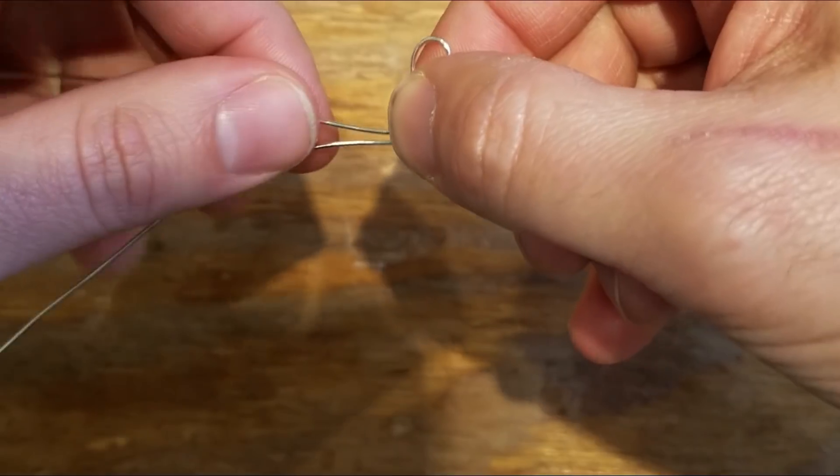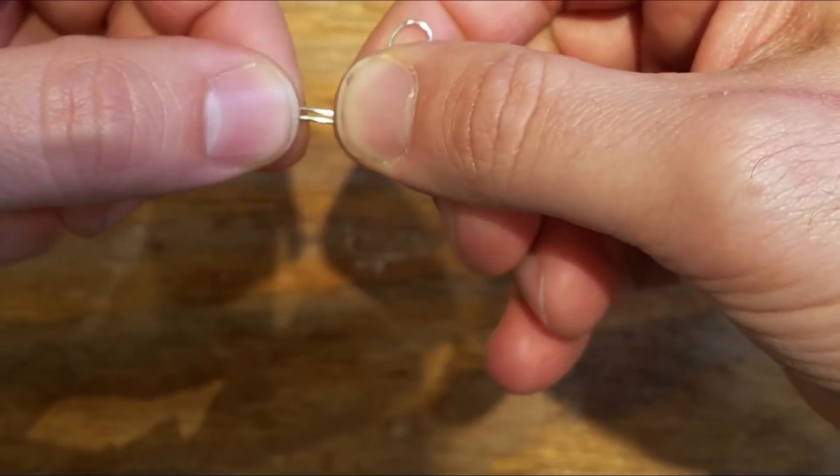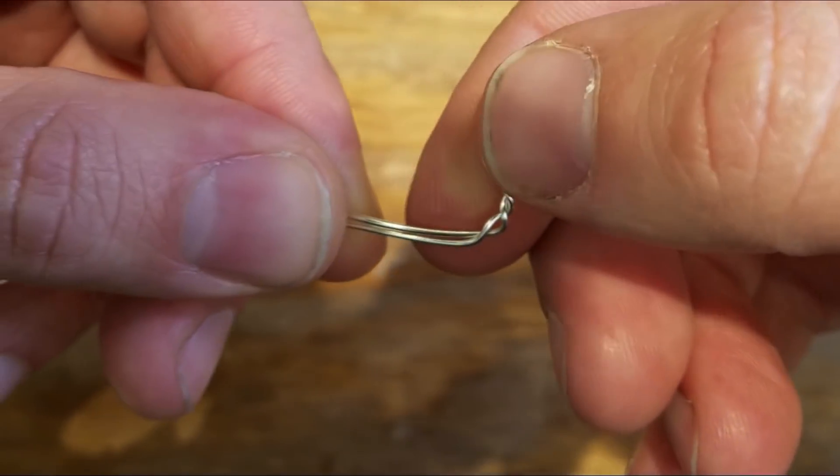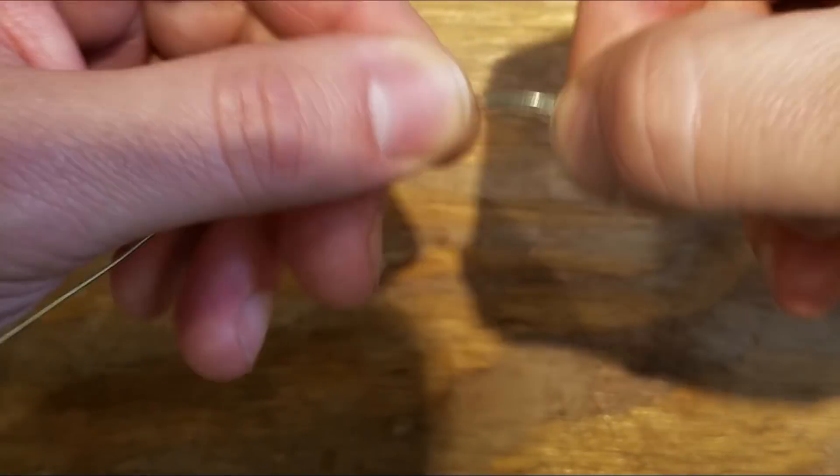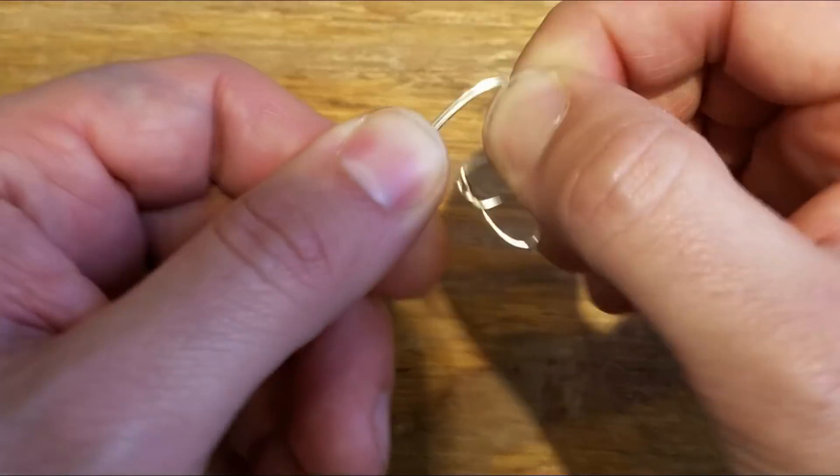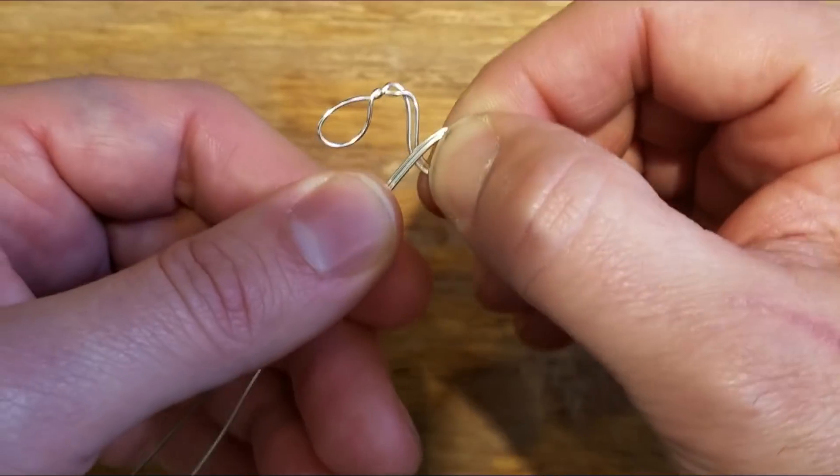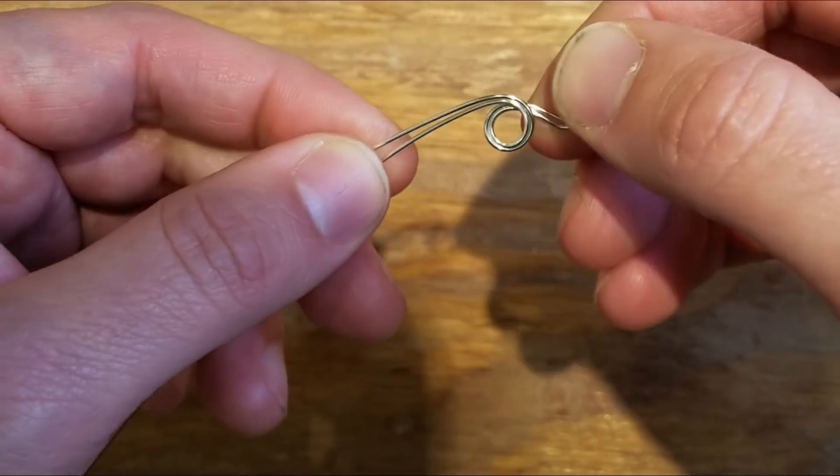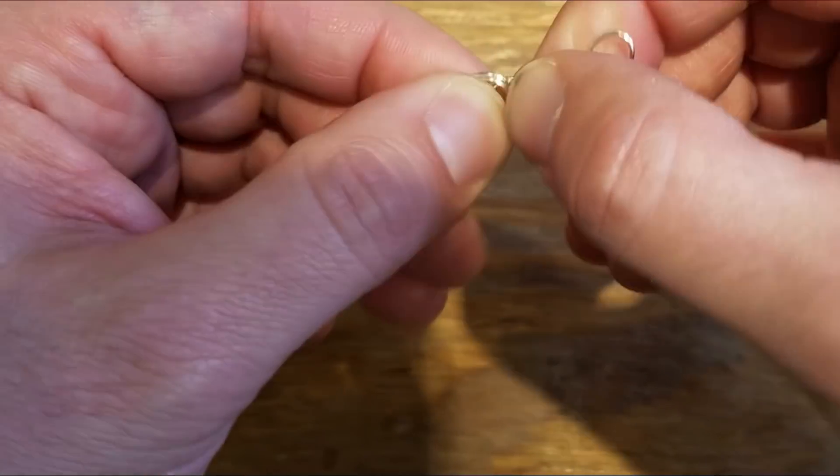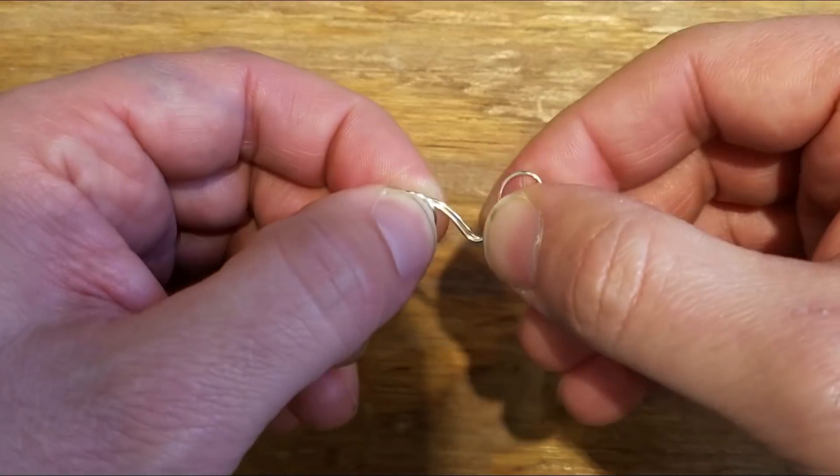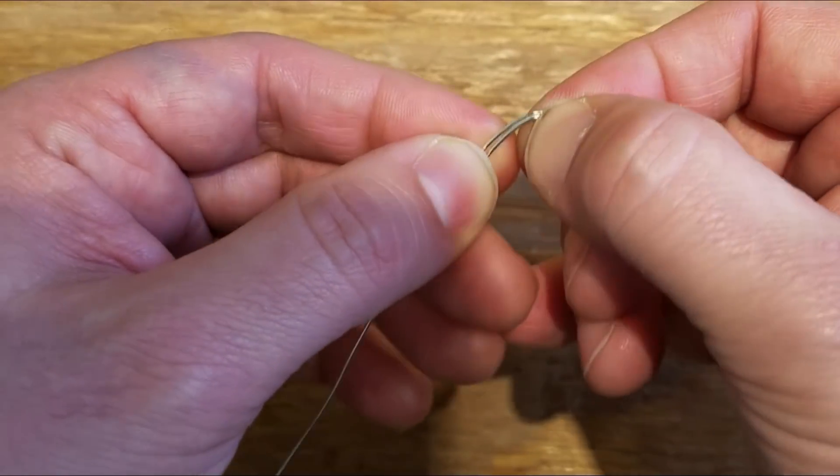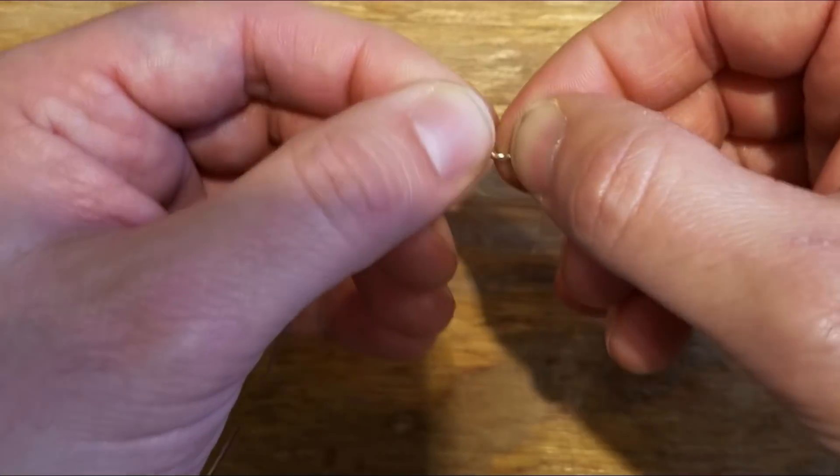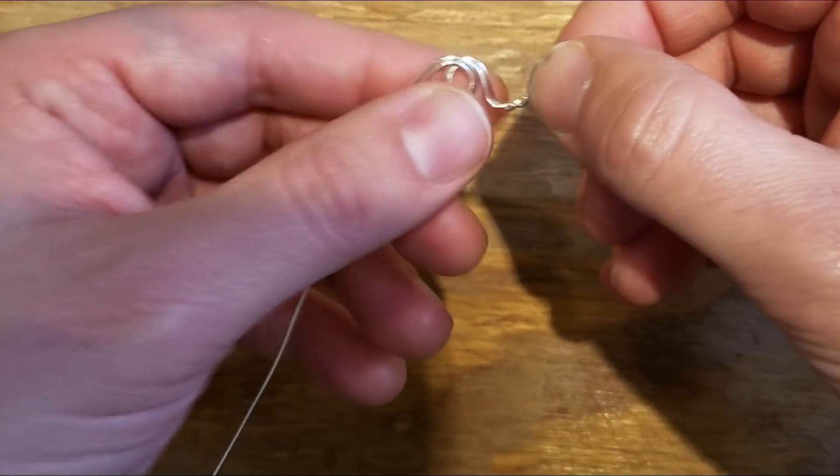Now all we're gonna do is simply just keep these two strands together and we're going to do loops and that's it. Bend it around, I keep pressing it and pressing it to keep the two strands side by side and flat.